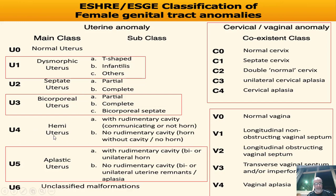This is the ESHRE/ESGE classification of female genital tract anomalies. It classifies uterine defects into six types: U0 normal uterus, U1 dysmorphic uterus (T-shaped, infantile, or other), U2 septate uterus (partial or complete), U3 bicorporeal uterus (partial, complete, or bicorporeal septum), U4 unicornuate uterus with or without rudimentary horn (communicating or not), U5 aplastic uterus. The cervix: C0 normal, C1 septate, C2 double normal cervix, C3 unilateral cervical aplasia, C4 cervical aplasia. Vagina: V0 normal to V4 absent vagina.